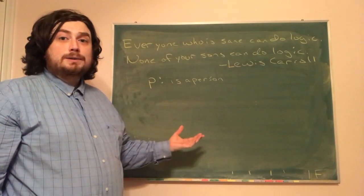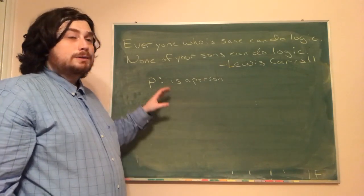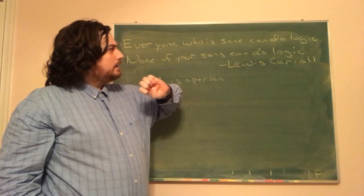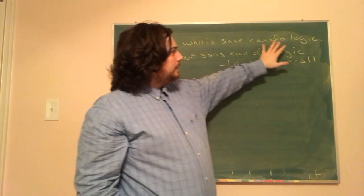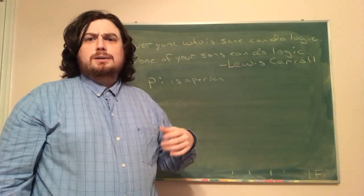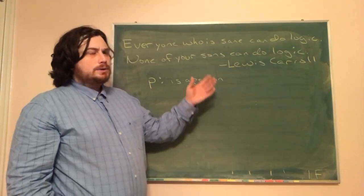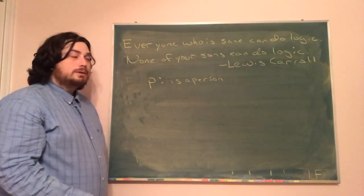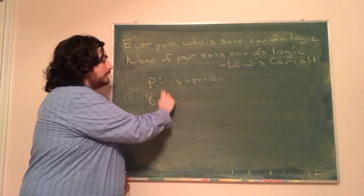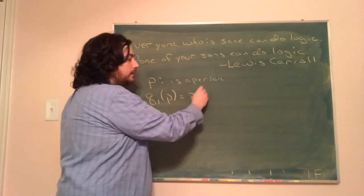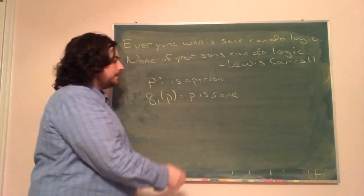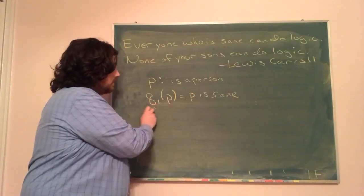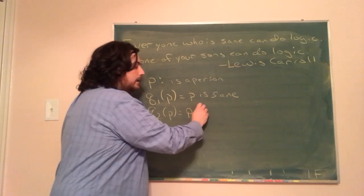The next thing I want to look at are any simple statements. I want to make sure I don't have any connectives in my simple statements. 'Everyone' is going to be a connective related to 'for all,' so we're going to leave that out as a simple statement. Within 'who is sane can do logic,' there's something about being sane and doing logic — some type of connective. So we break that up: 'is sane' and 'can do logic' are both simple statements. I'm going to define Q₁(P) as person P is sane, and Q₂(P) as that person can do logic.